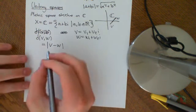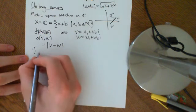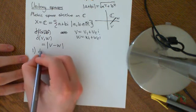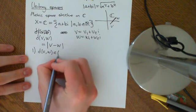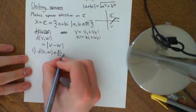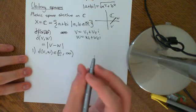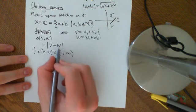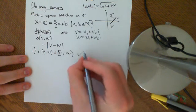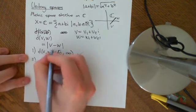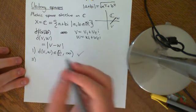This is a metric space. Let's see that it obeys the first axiom: D(V, W) is an element of [0, +∞). The modulus of a complex number is always a non-negative real number, and whatever V minus W is, it is certainly a complex number.